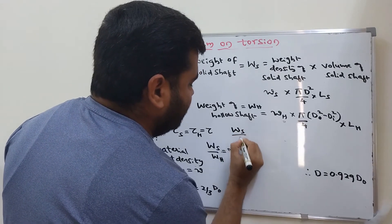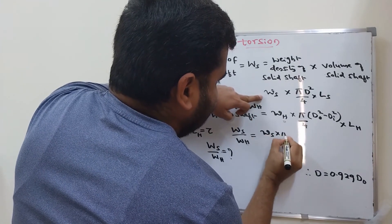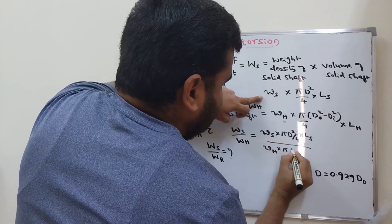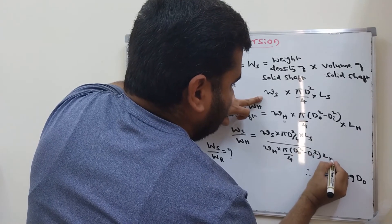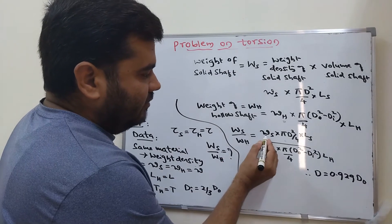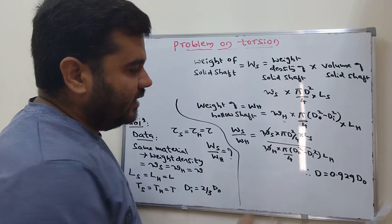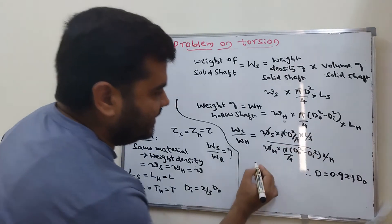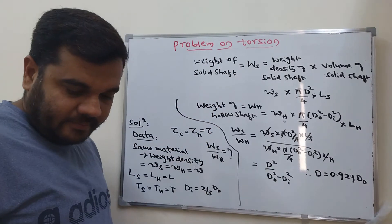To compare the weights: weight of solid shaft divided by weight of hollow shaft equals [w × (π d²/4) × L] divided by [w × (π(D_o² − D_i²)/4) × L]. Since weight density and length are the same for both shafts, and π/4 cancels, we get: d² / (D_o² − D_i²).